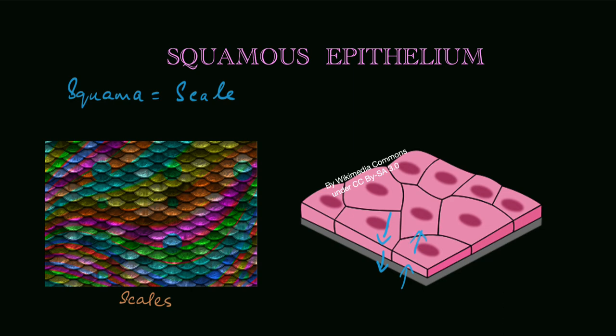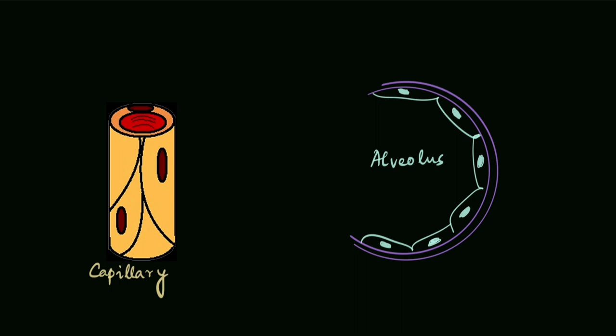If you take a layer of squamous cells and roll it into a tube, this is what it looks like, and this is also what a blood capillary looks like. The walls are composed of just a single layer of flat squamous cells.